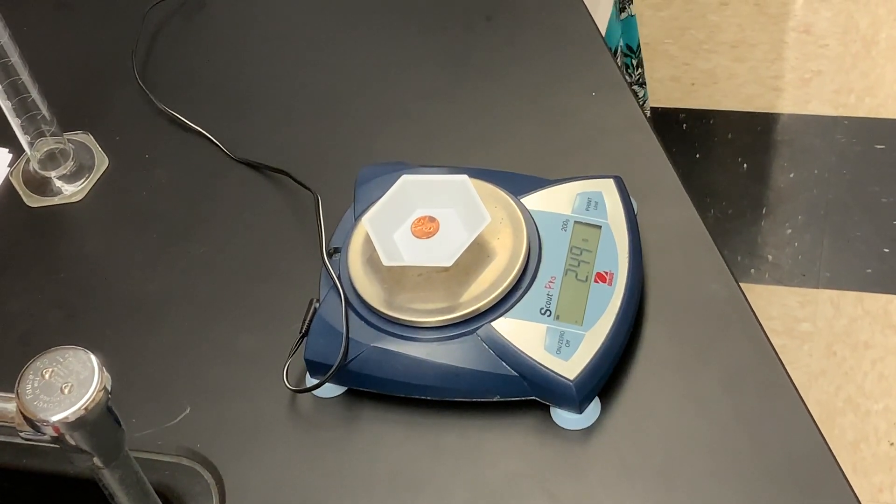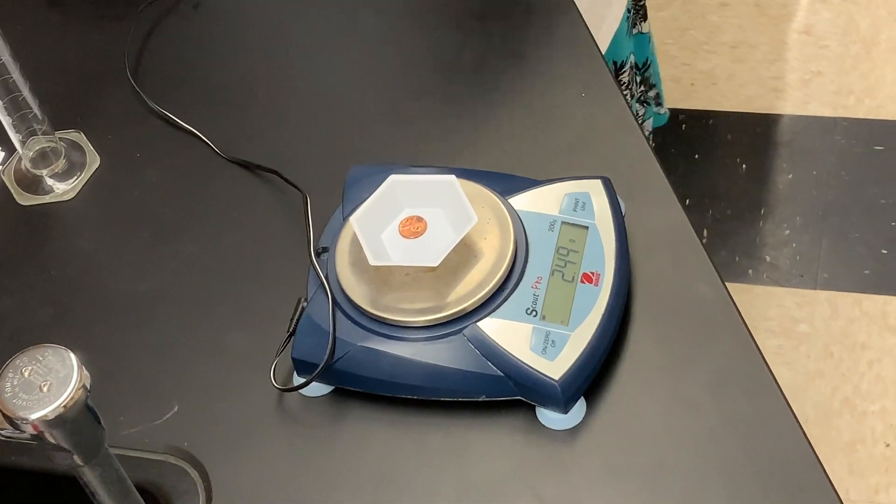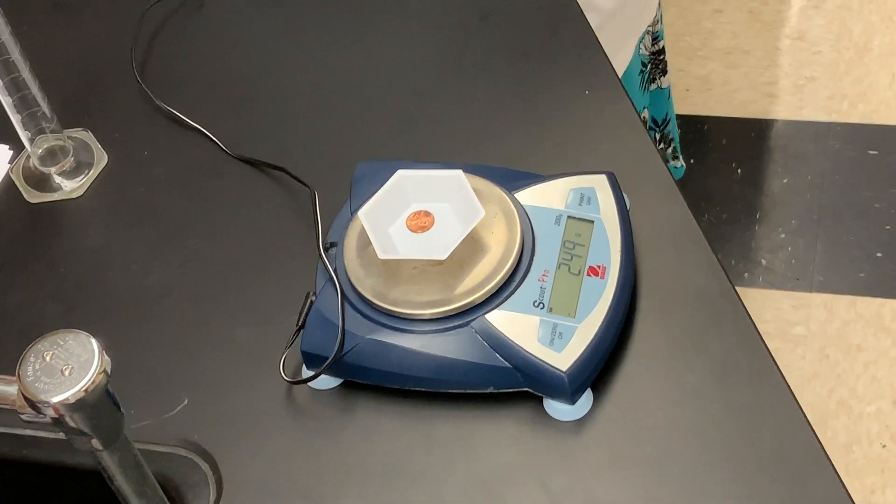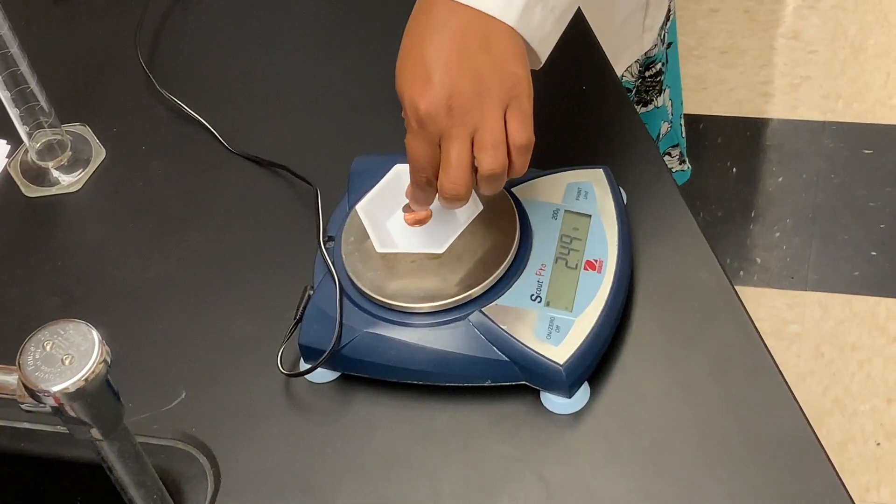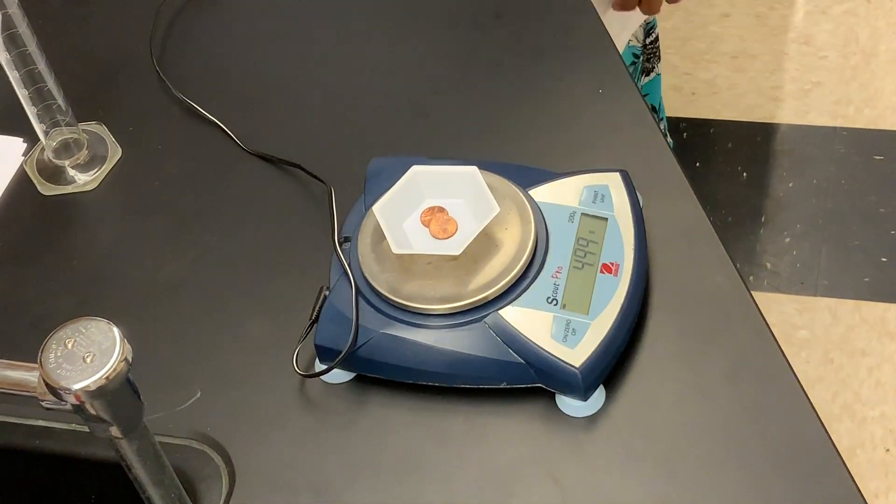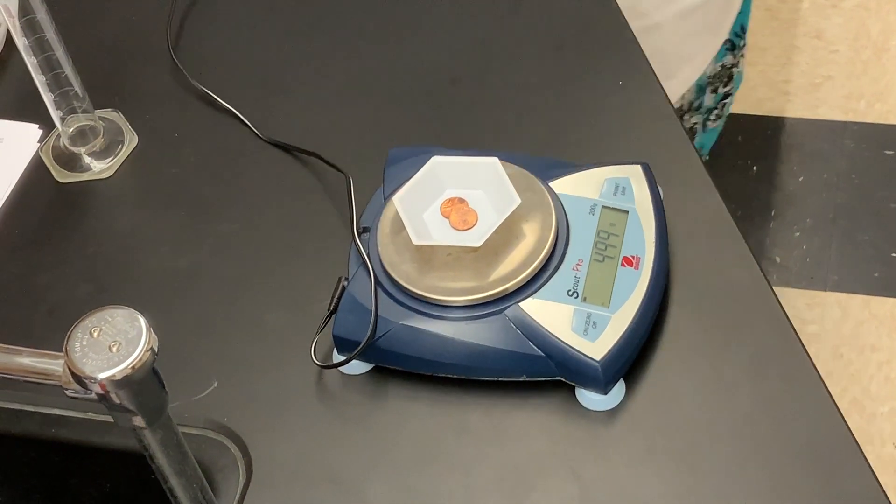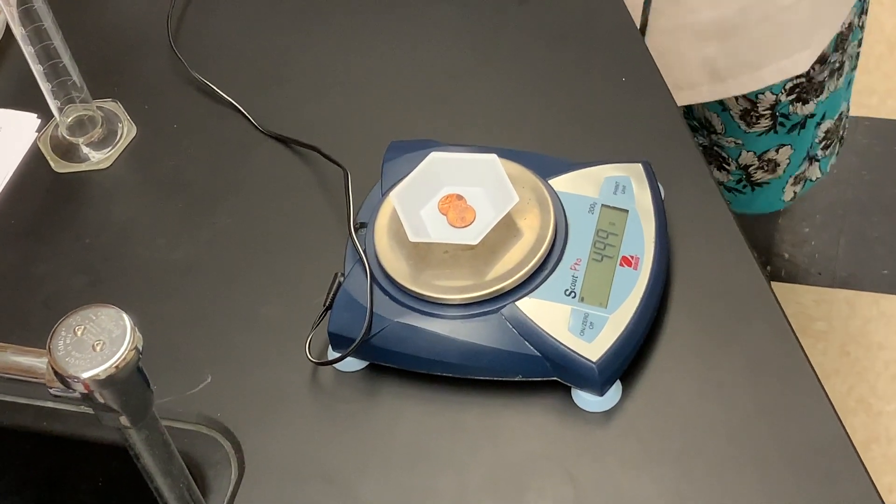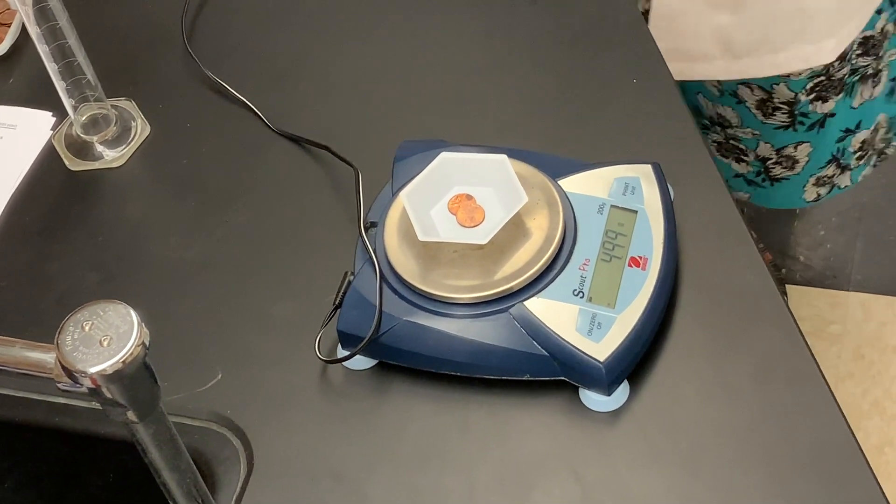Now we're going to place a second penny on the balance. Always place things on the balance very gently so you don't damage the balance. Now we're going to record the mass of two pennies, and it's reading 4.99 grams.